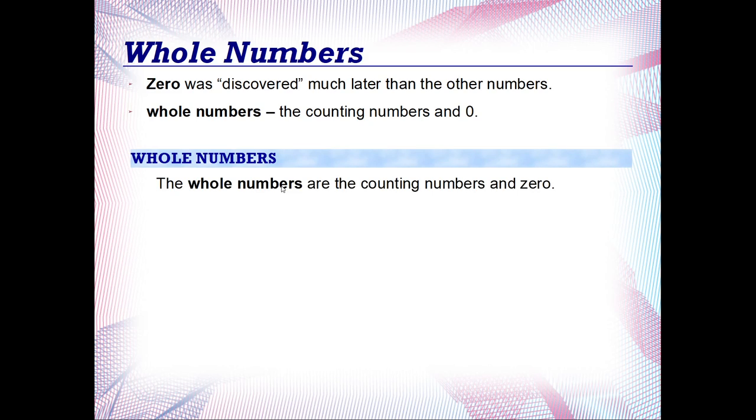So what do those look like? Well, here we have the counting numbers, which is one, two, three, four, five, and an ellipsis to indicate that they continue forever, and zero.